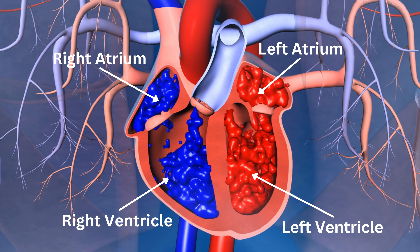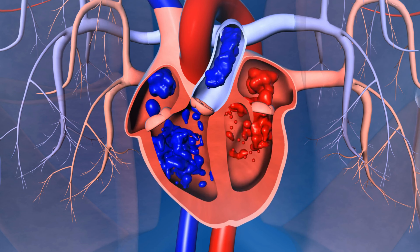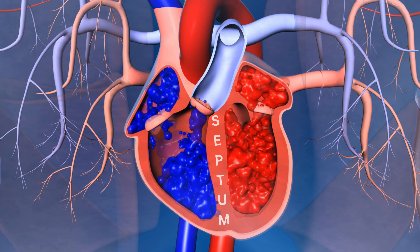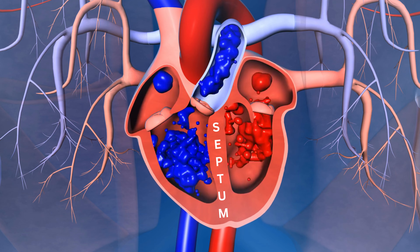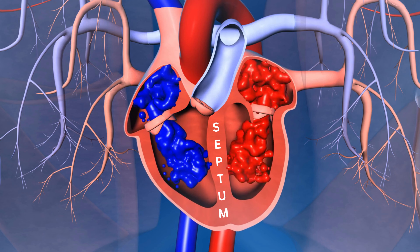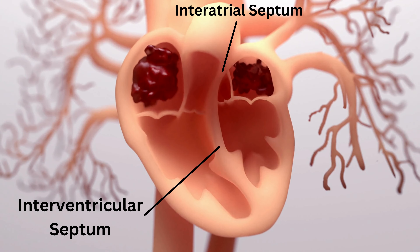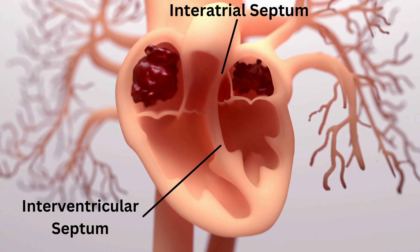The heart is divided into left and right halves by a muscular wall called the septum. The interatrial septum separates the atria, and the interventricular septum separates the ventricles.